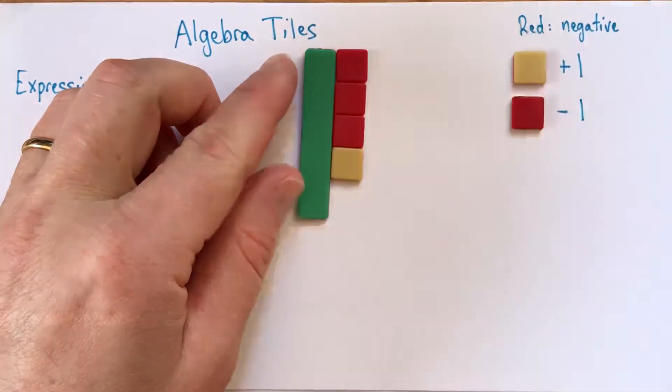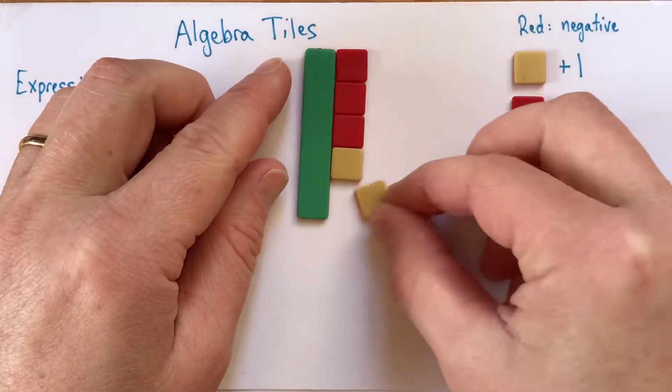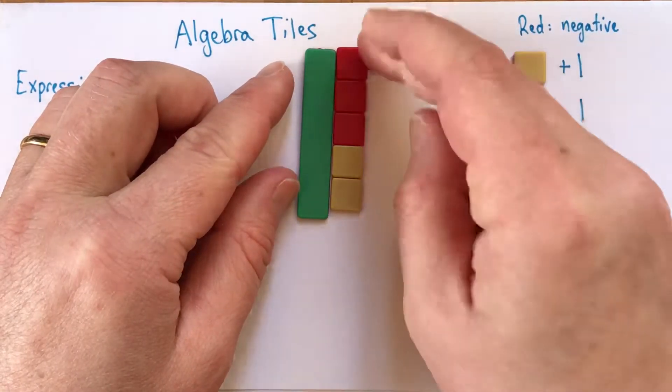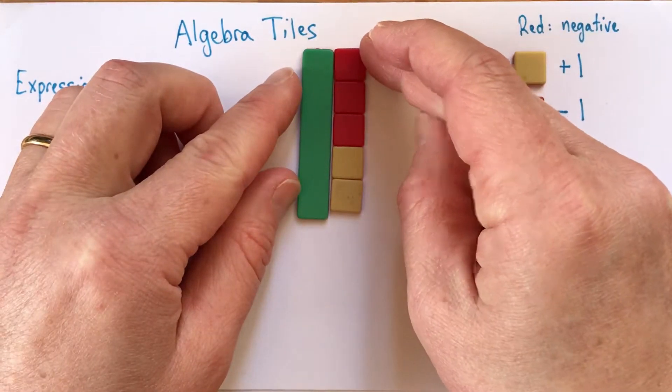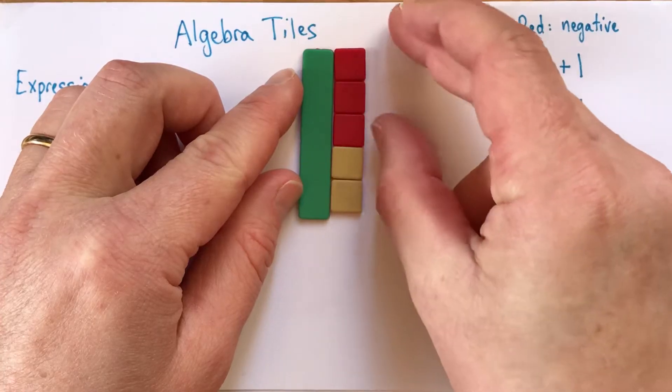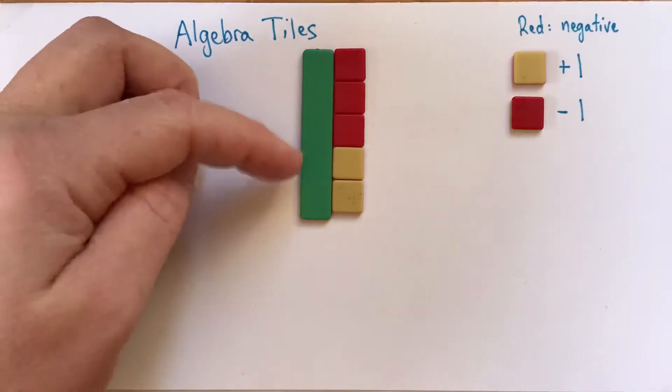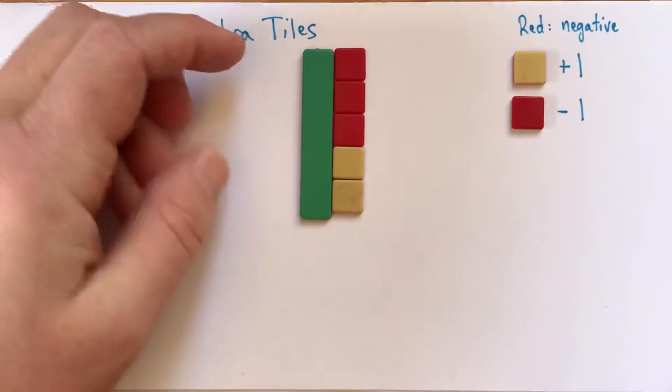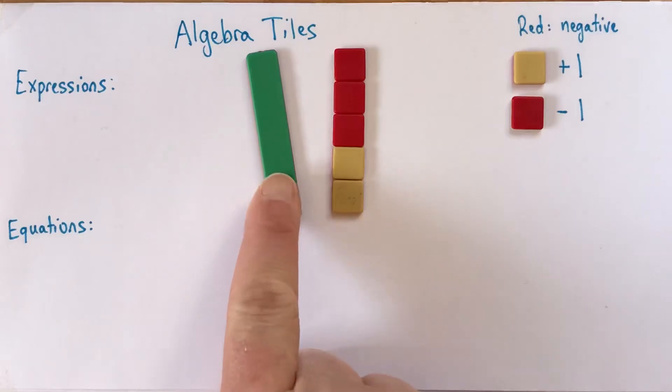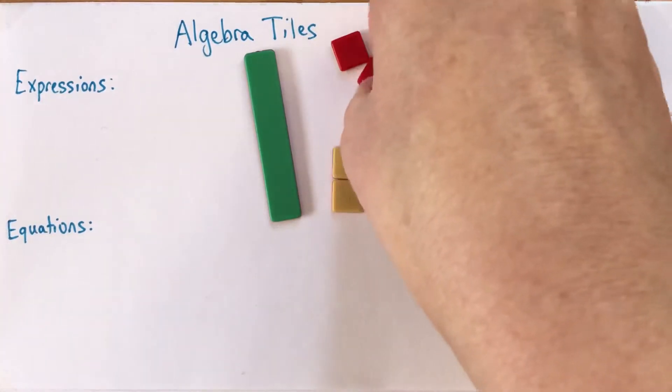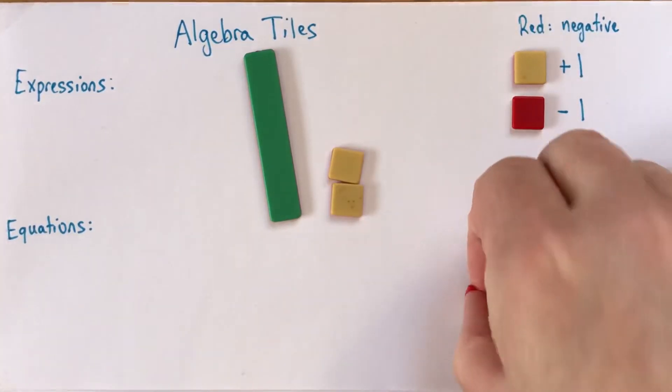Usually they make them so it's not exactly a whole number of times as long. Like, this one is a little bit more than five times as long as one of the little guys. And that's intentional. This does not represent five. It represents a variable.